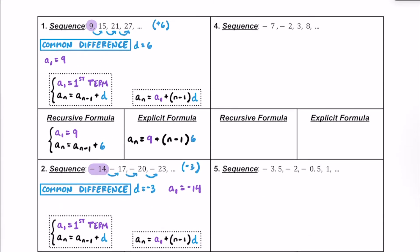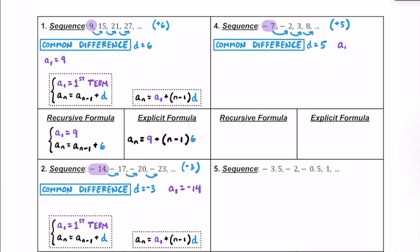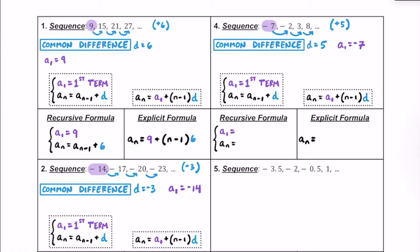Here's number 4. We have the numbers negative 7, negative 2, 3, and 8. From negative 7 to negative 2, it looks like we're going up by 5. From negative 2 to 3, it's up another 5. And then 3 to 8, it's up another 5. So our common difference is positive 5, and negative 7 is our a sub 1. For the recursive formula, a sub 1 equals negative 7, and any a sub n equals a sub n minus 1 plus 5, since our common difference was adding 5 between each of those terms.